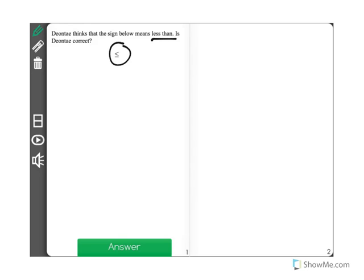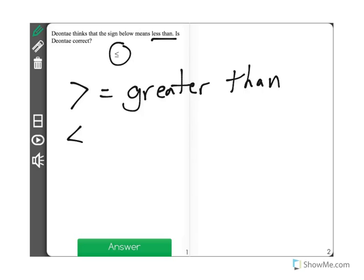Now we have four inequality signs. We have the ones that we learned earlier on in elementary school, greater than and less than. And then we learned about two new ones.